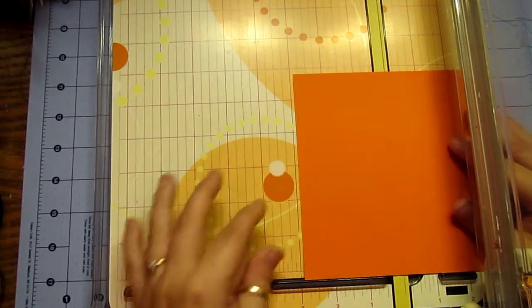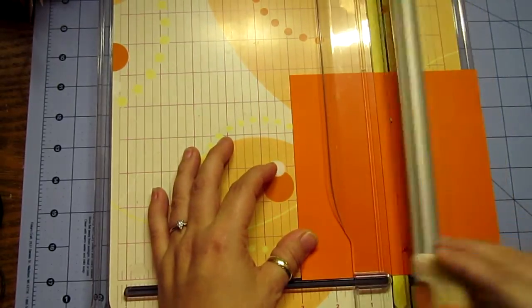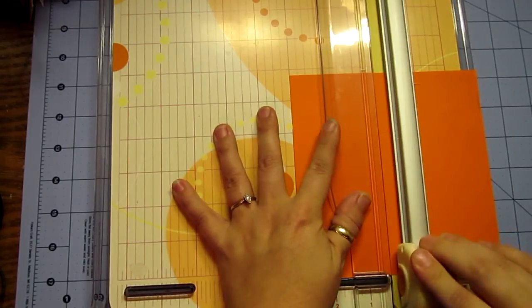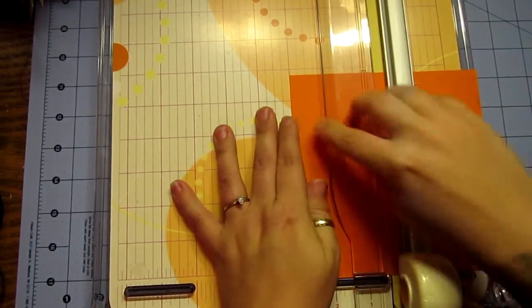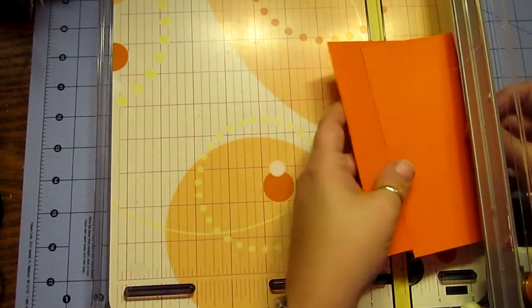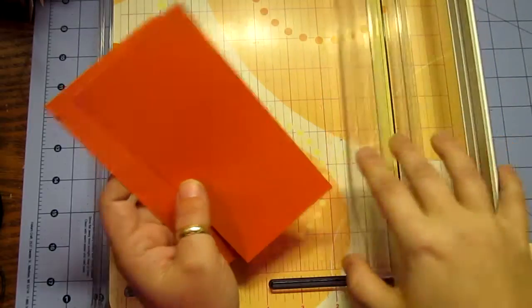So you're going to take a 12x12, cut it in half to a six by 12, and then you're going to cut the six by 12 into a six by six, and then one six by six by three by three. So you can use the same color or two different colors.